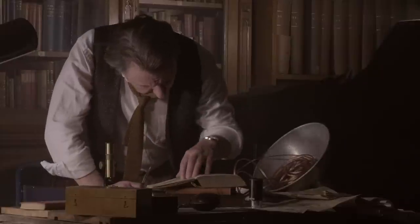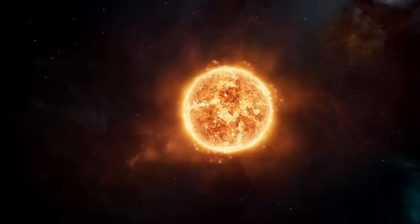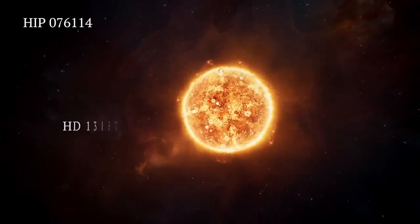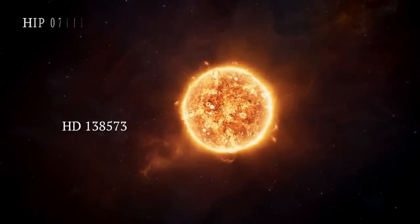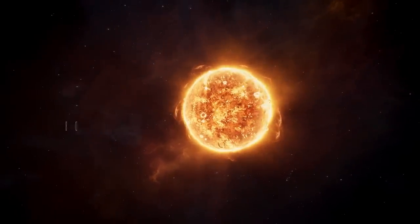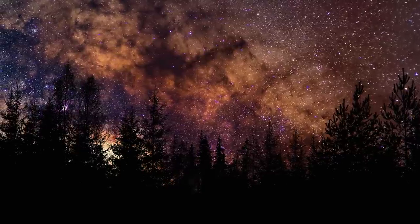And finally, they found what seemed to be a perfect match. HIP 076114, also known as HD 138573, emerged as the best twin candidate for our Sun. It not only looked like the Sun, but also displayed similar properties in terms of absolute magnitude and age. This certainly was an exciting discovery.